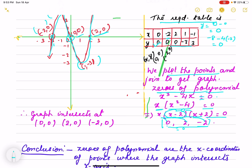So all these cases, we get polynomial equals 0. That means graph intersects at which point? Abscissa is 0, and ordinate is 0. So 0, 0, then 2, 0 and minus 2, 0. These are three points where it intersects. We verify both ways by graphical method or zeros of the polynomial.